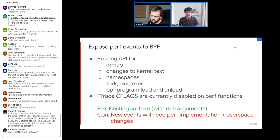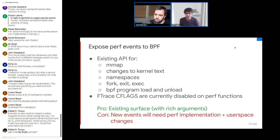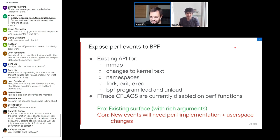Could we tag certain trace points as audit-worthy and solve the attachment surface issue? You could say this is a BTF audit trace point. The value-add depends on whether it uses the same program type. Regardless, the recommendation is to start the discussion with the perf subsystem about the C flags problem — it's a problem not just for this use case.